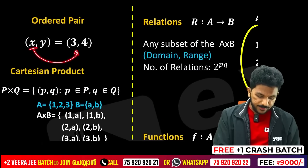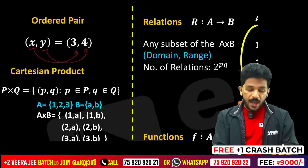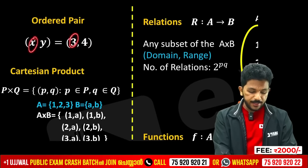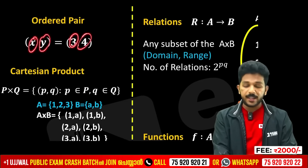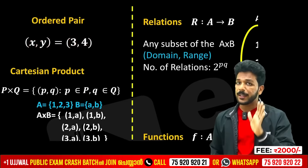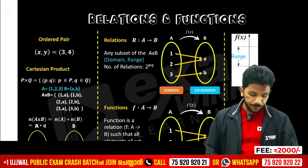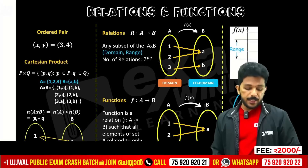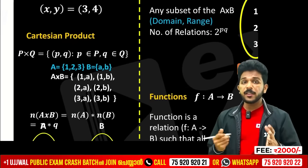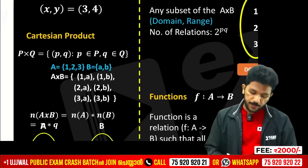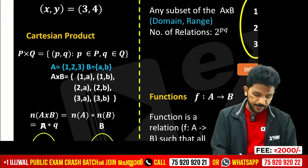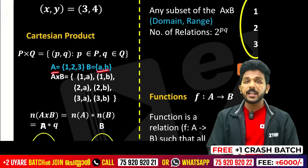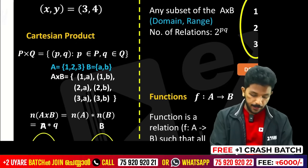X is the first element, Y is the second element — that order is called an ordered pair. Cartesian product, also called cross product: take the first set and second set, form all ordered pairs — (1,A), (1,B), (2,A), (2,B), (3,A), (3,B).